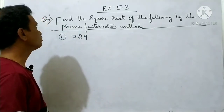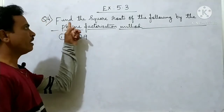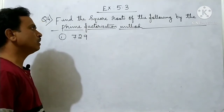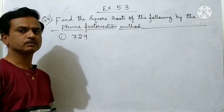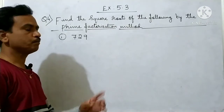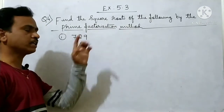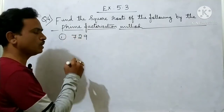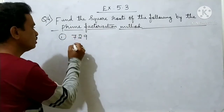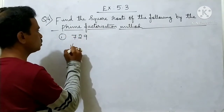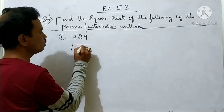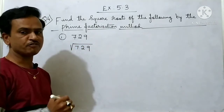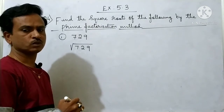Question number 4: Find the square roots of the following by the prime factorization method. Question number 1 in this is 729. We should find the square root of 729 by the prime factorization method.